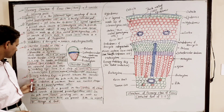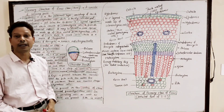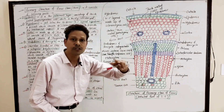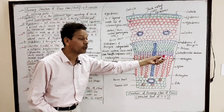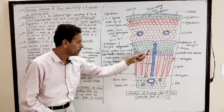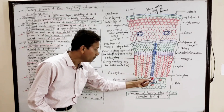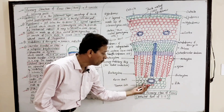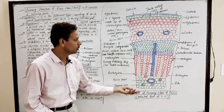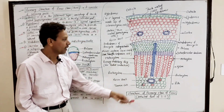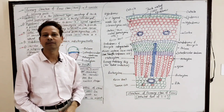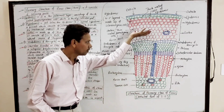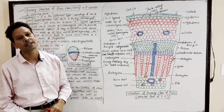Next, primary medullary rays. These primary medullary rays separate the vascular bundles. And this primary medullary ray connects the central part — the pith — to the cortex, and is involved in radial conduction of substances.